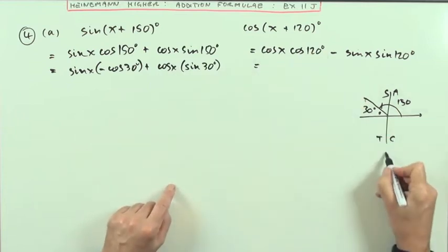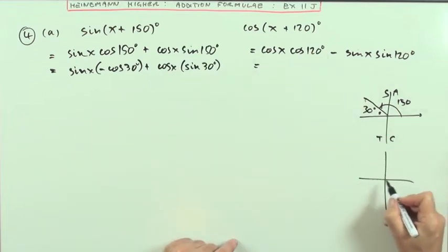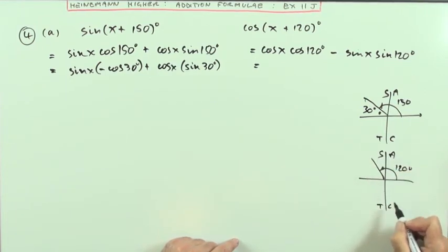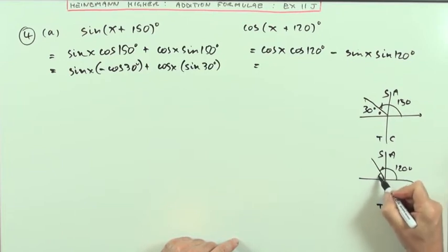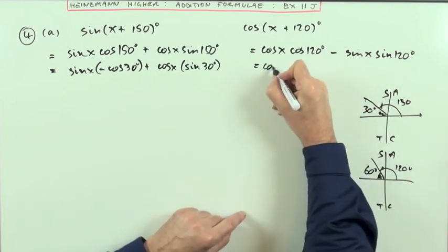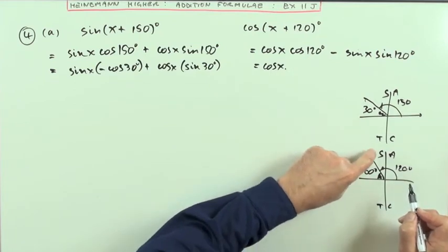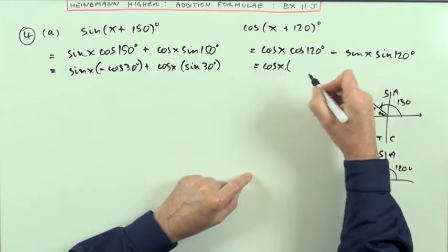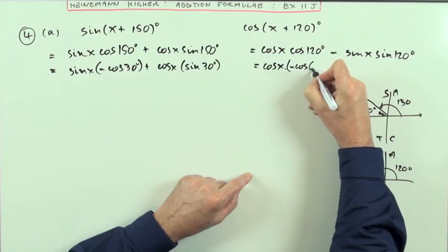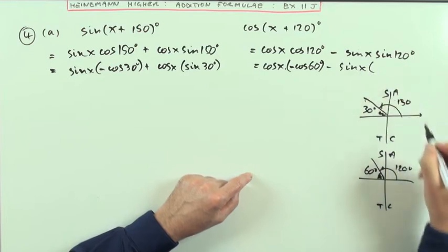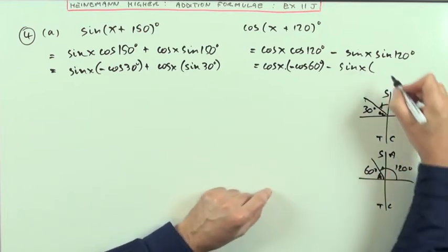Now what about this pair? Where's 120°? If I go around 120 degrees, all sine, tan, cos. The angle I'm left with here is 60 degrees. So that's going to be cos x times negative cos 60°, since cosine is negative in this quadrant, minus sin x times sin 60°, which is positive.